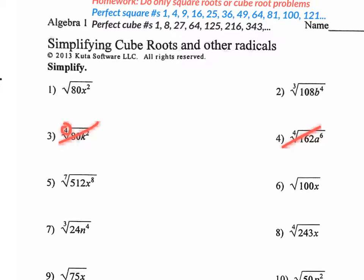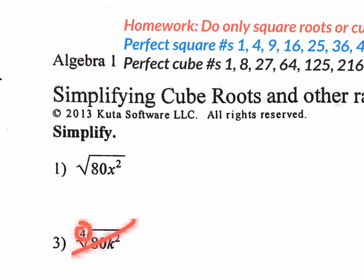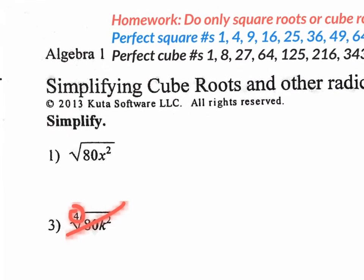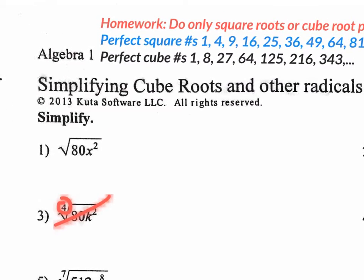Let's start with number 1: the square root of 80x². When you do the square root of 80x², keep in mind this is a square root, so we're going to split the root. You're going to rewrite it as the square root of 80 times the square root of x². Now 80 is not a perfect square number. Let's look at the perfect square numbers I wrote in blue.